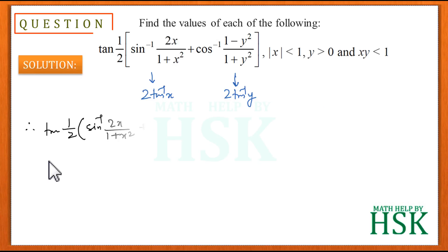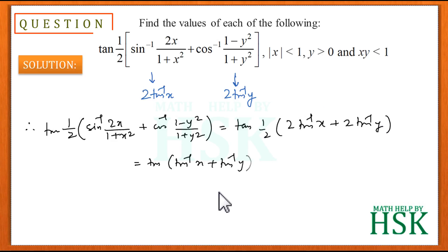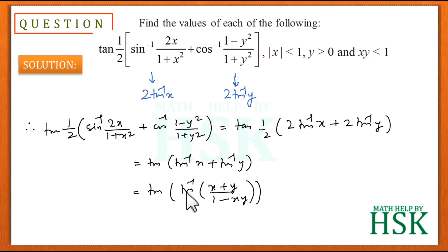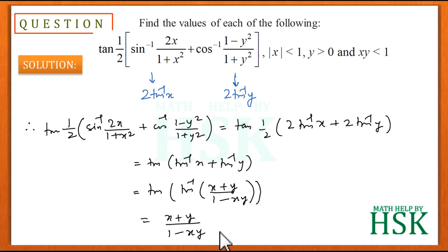Now combining, the full expression becomes (1/2) × [2tan⁻¹(x) + 2tan⁻¹(y)]. The factor of 2 cancels, giving tan(tan⁻¹(x) + tan⁻¹(y)). Using the addition formula, this equals (x + y)/(1 − xy), which is the required answer. The condition xy < 1 is given, which justifies use of this formula.